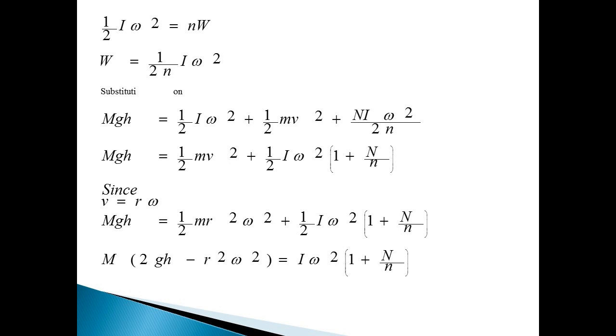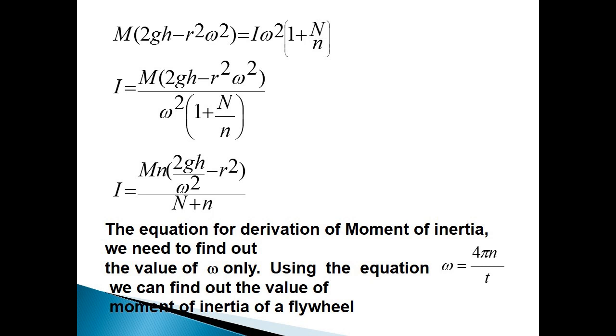Making together the terms containing mass, M(2gh - r²ω²) = Iω²(1 + N/n).